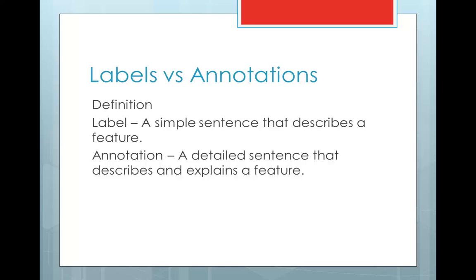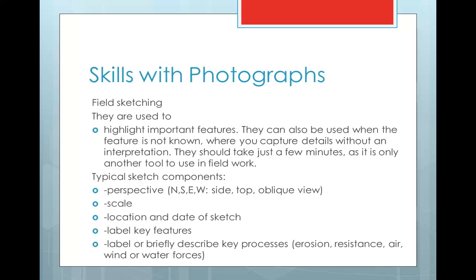What are you going to be asked to do on these images once you've got them? Well, you can be asked to do a range of things. The key is labelling, which is a simple sentence that describes a feature. The second is annotation, which is actually explaining things and developing ideas further. These two are both important. Most of the time you're going to be asked to do the labelling in exams because it's about interpreting maps. You need to be able to highlight important features from photographs and capture details without an interpretation, and work quickly with it as well.